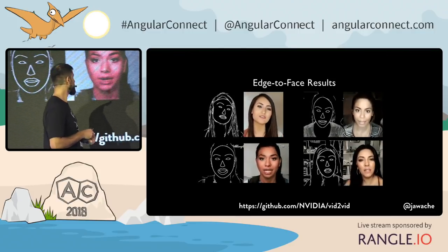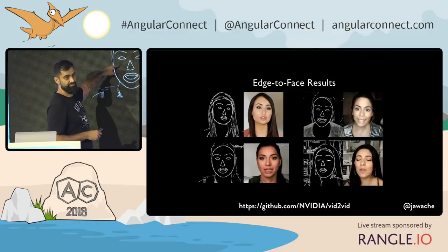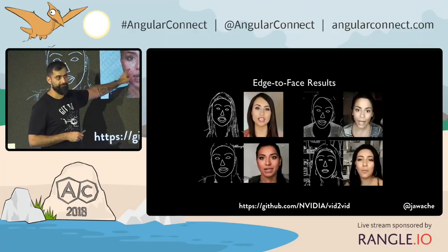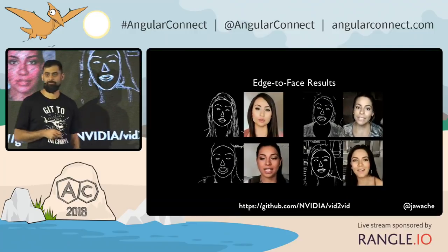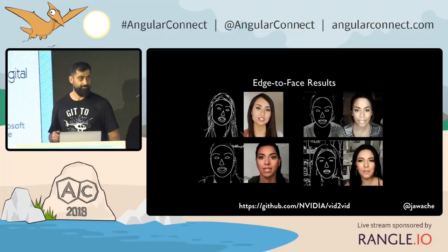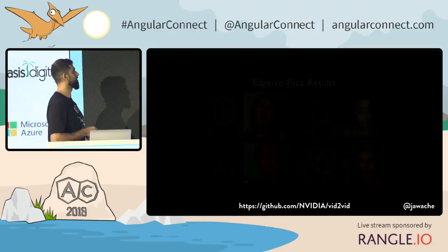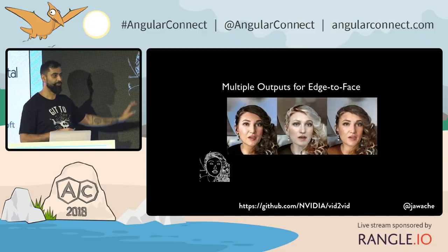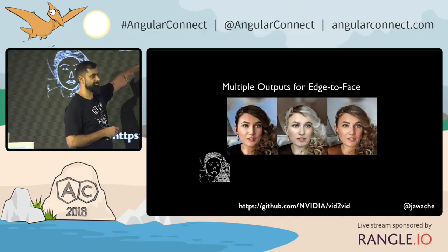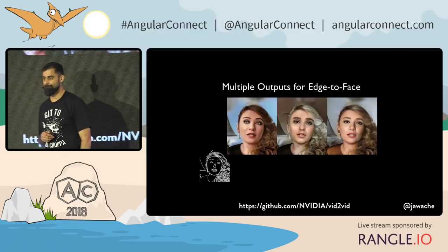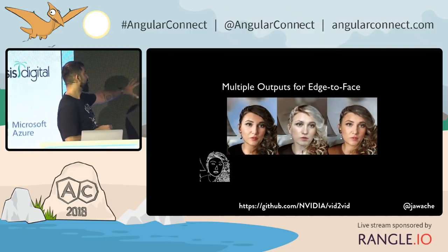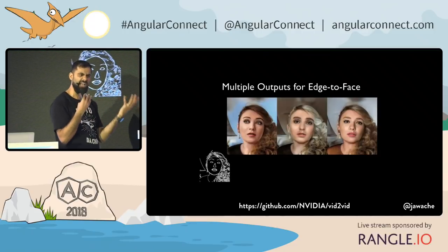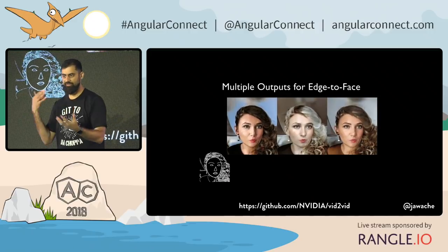These are the inputs. These are the outputs. The inputs here are taking outlines of images. But you can actually train these GANs to take any kind of input — it doesn't just have to be an outline of an image.